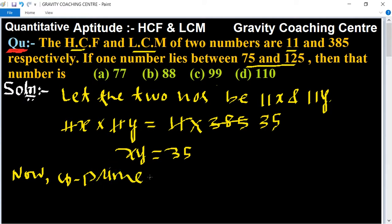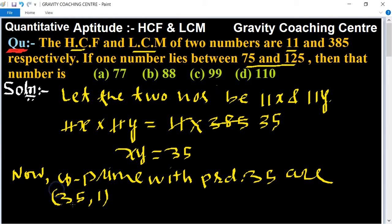Co-prime pairs with product 35 are: 35 comma 1, and 7 comma 5.